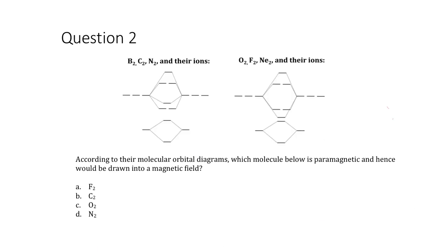Question 2 moves on to molecular orbital diagrams for second-row molecules. These base diagrams are provided on exams so you don't need to memorize them. The only difference between the two diagrams is the relative positions of two energy levels. We use one diagram for B2, C2, N2 and their ions, and the other for O2, F2, Ne2 and their ions.